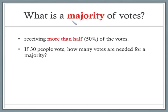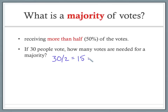A lot of times in voting, we talk about something called a majority of votes. A majority is receiving more than half, or more than 50% of the votes. So if 30 people vote in an election, how many votes are needed for a majority? We would just take 30 and divide it by 2, so it's 15. Now 15 would equal our 50%, but notice we need more than 50%. So in this election, to have a majority, you would actually have to have 16 votes.